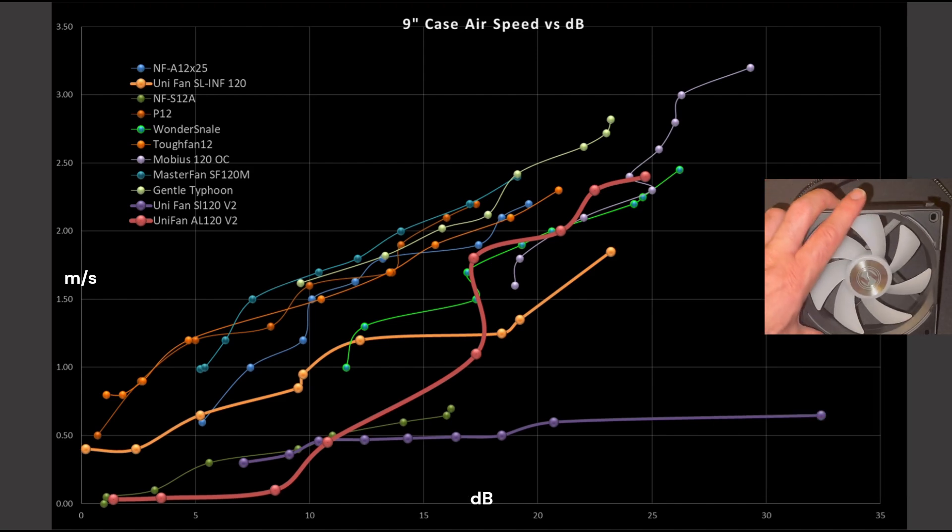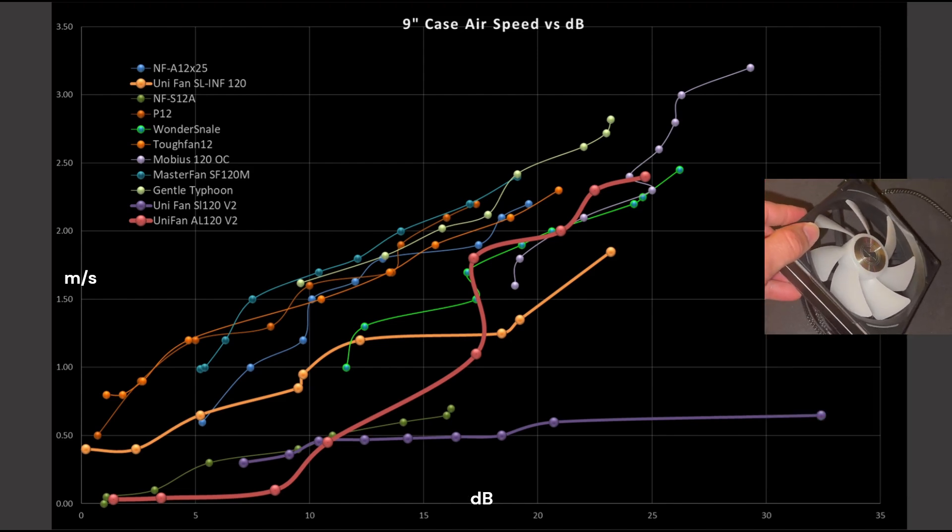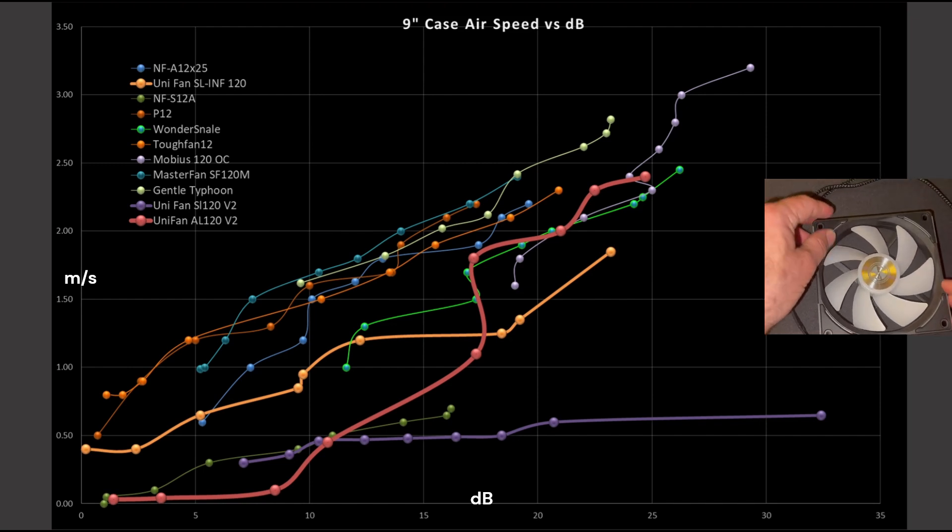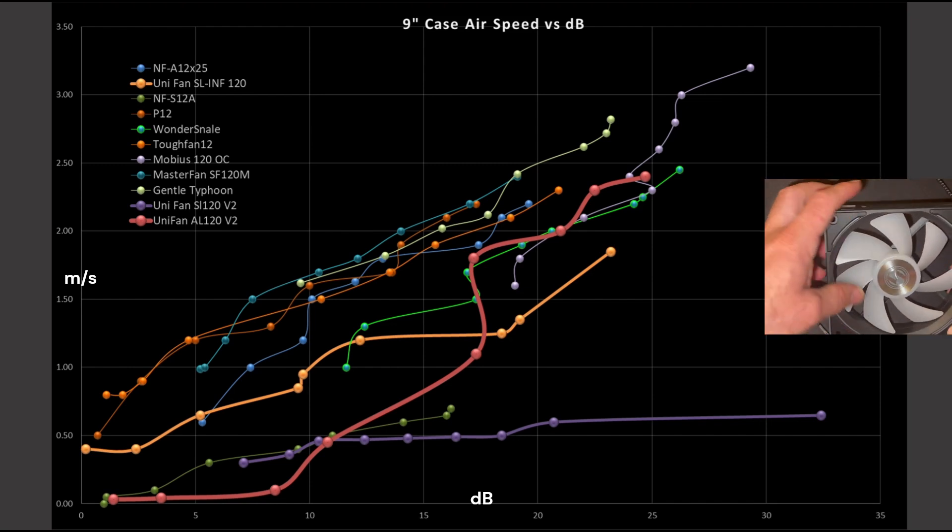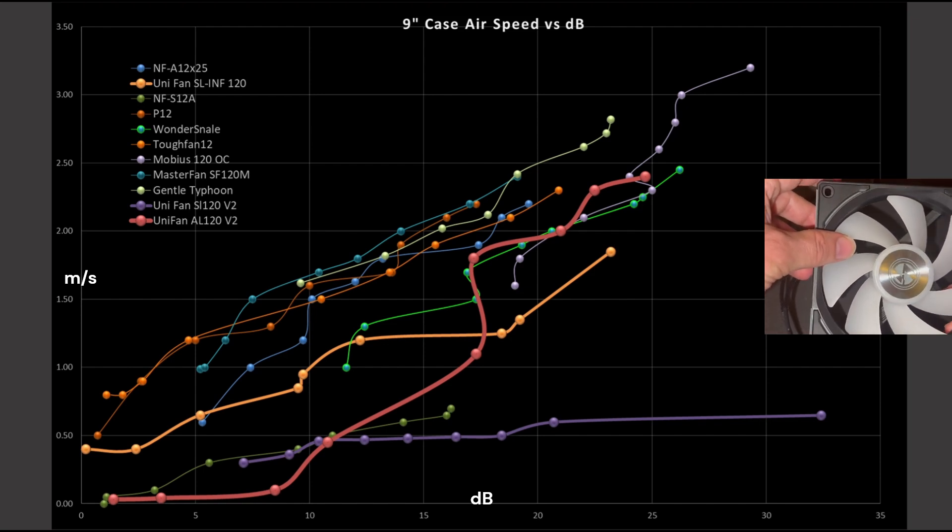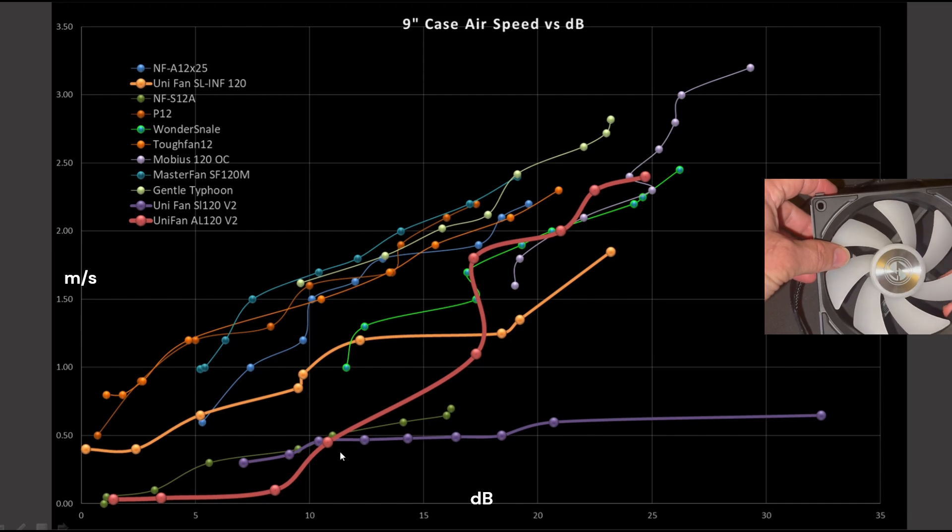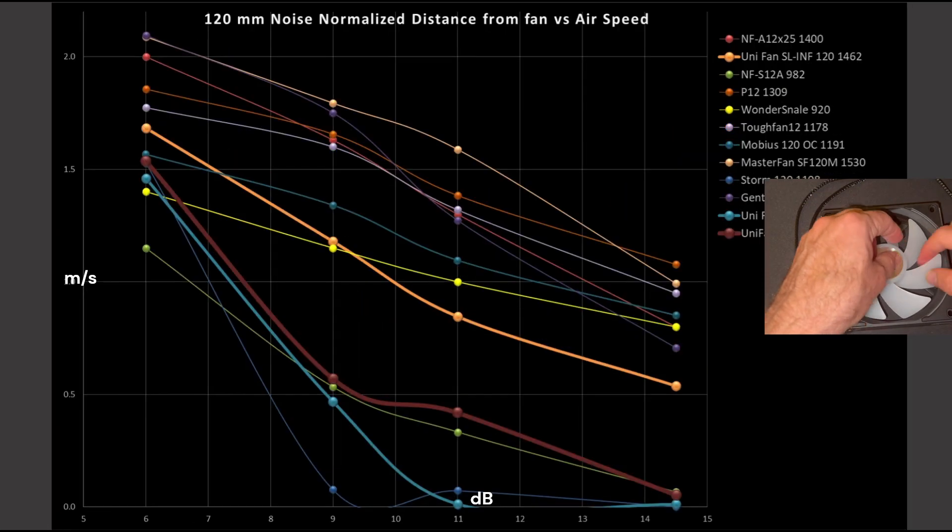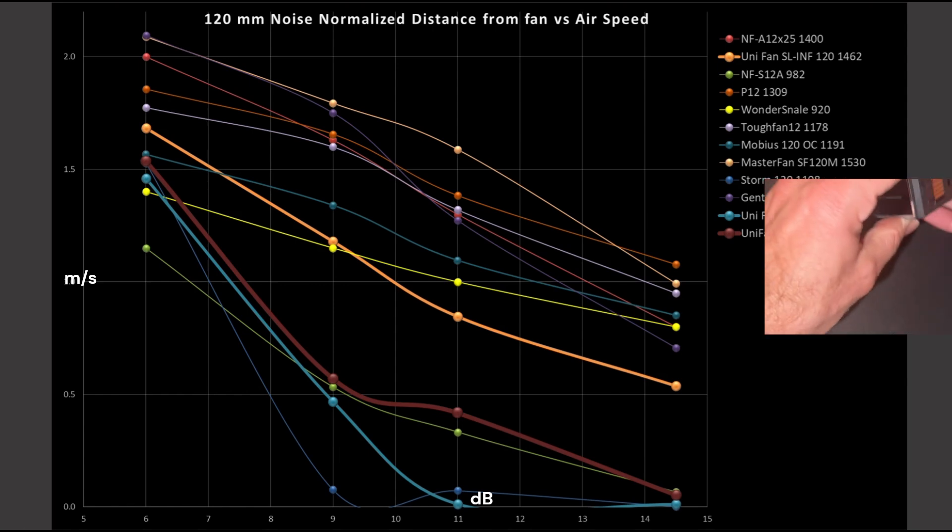Next, let's take a look at airspeed versus noise rating in decibels. As I note, every 10 decibels is a doubling in noise volume. So just because a line looks linear doesn't mean it is linear because every 10 decibels is doubling. And the 9-inch mark was chosen because I need an airspeed over 0.5 meters per second in order to get a good, accurate reading.